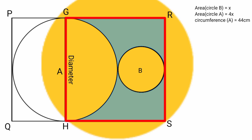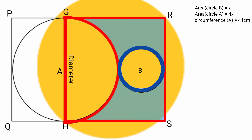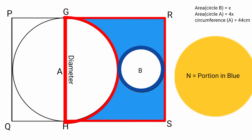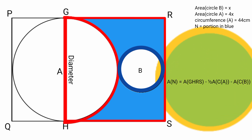The semicircle of circle A and circle B are inside quadrilateral GHRS. So if we subtract the area of the semicircle of A and the area of circle B from the area of GHRS, we are left with the blue portion. Let the blue portion be N. Then: area of N equals area of GHRS minus area of semicircle A minus area of circle B. The area of the semicircle of A is half the area of circle A.